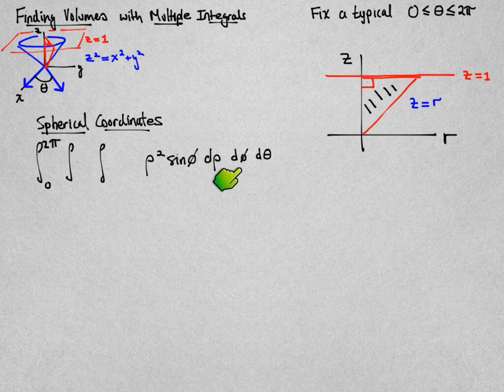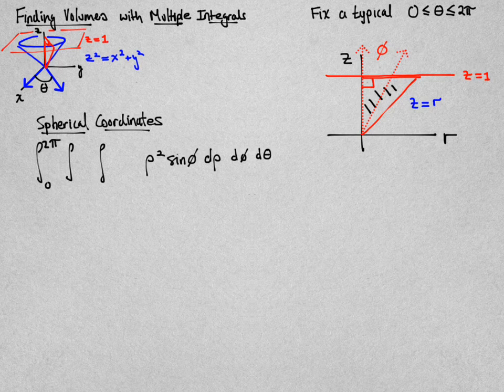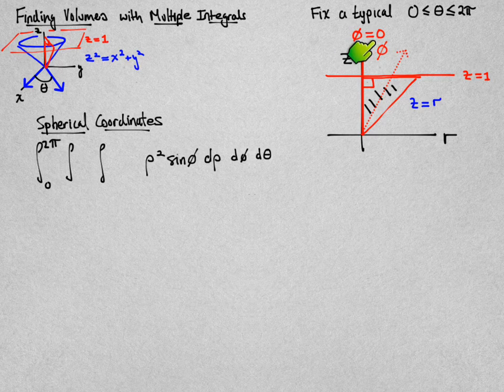What I need to do next is determine the values that the angle phi will range through. Remember that phi is the angle formed between the positive z axis and the point that you want to get to. In this case, I'm going to start with a value of phi equal to 0 that corresponds to the ray of phi going along the positive z axis.